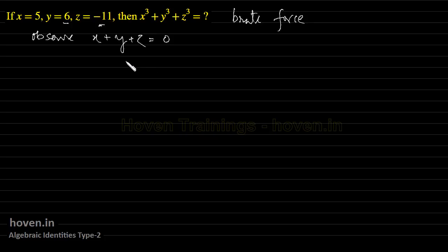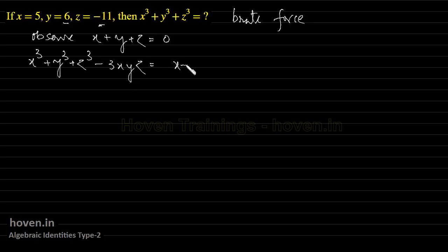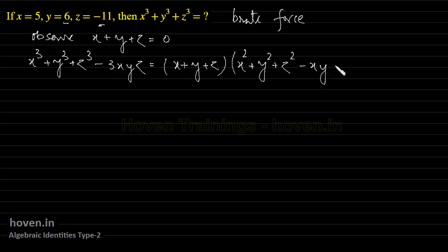If we keep this observation in mind, then we are in a position to use this formula: x cube plus y cube plus z cube minus 3xyz is equal to x plus y plus z, multiplied by x square plus y square plus z square minus xy minus yz minus zx. This identity we are already aware of.